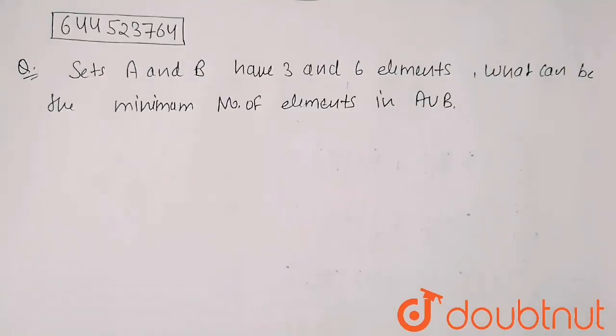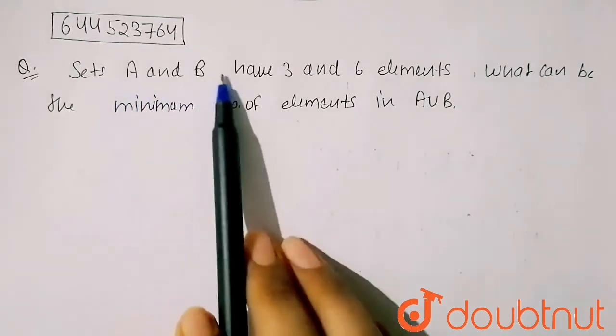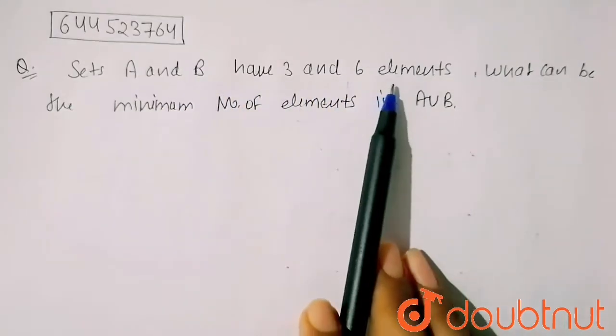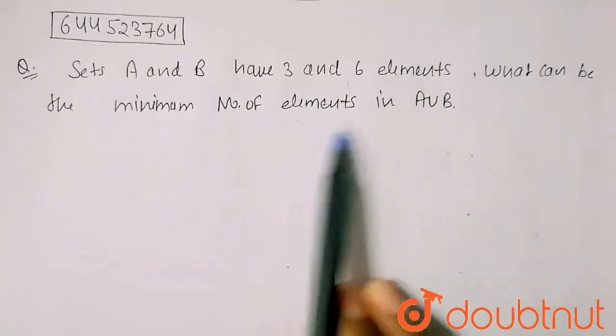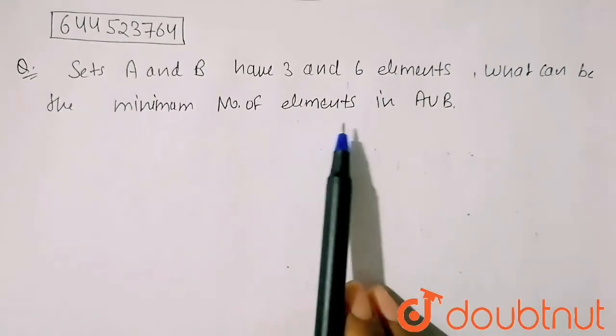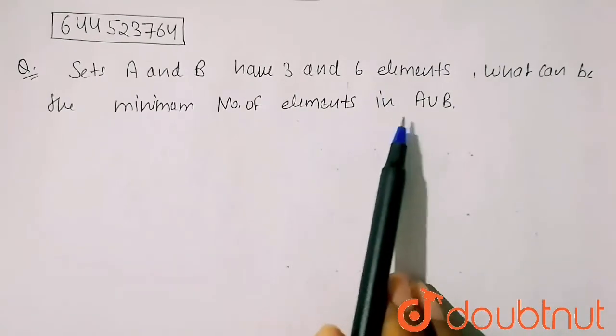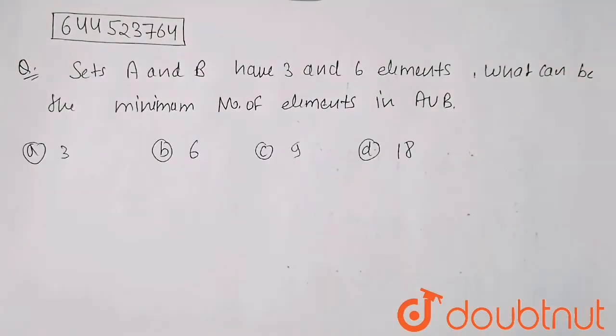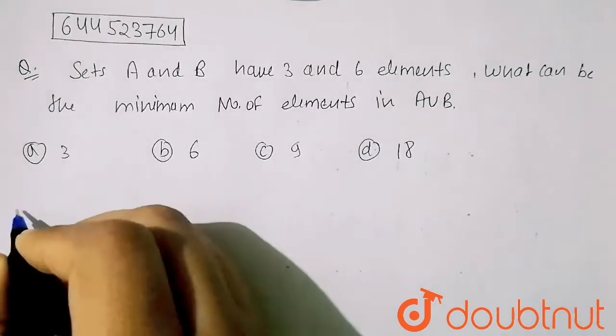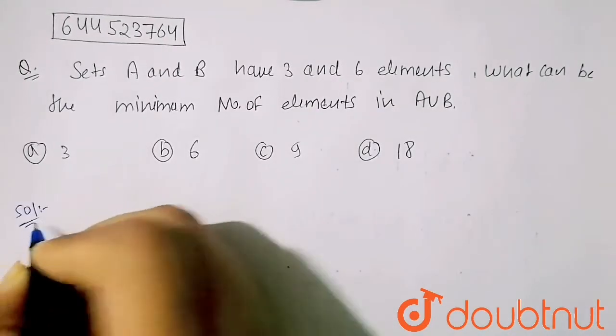I have to find the sets A and B have three and six elements. So what can be the minimum number of elements in A union B? And my options are given: three, six, nine, and eighteen.